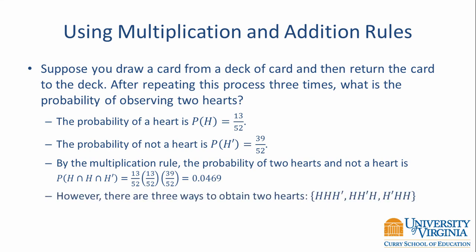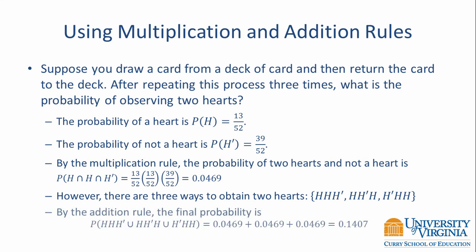However, there are three ways we can obtain two hearts and a not-heart: heart-heart-not-heart, heart-not-heart-heart, and not-heart-heart-heart. We use the addition rule to consider all three of these possibilities. By the addition rule, the final probability is 0.0469 plus 0.0469 plus 0.0469, which equals 0.1407. Therefore, the probability of observing two hearts and a not-heart is equal to 0.1407.